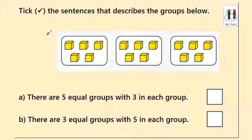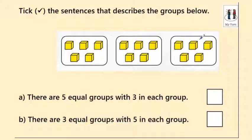So we need to tick the sentences that describe the groups below. There are two options: A — there are five equal groups with three in each group, or B — there are three equal groups with five in each group. Only one statement is correct. So counting the groups: one group, two groups, three groups. There are three groups, and I'm just going to jot down what I found so I don't forget.